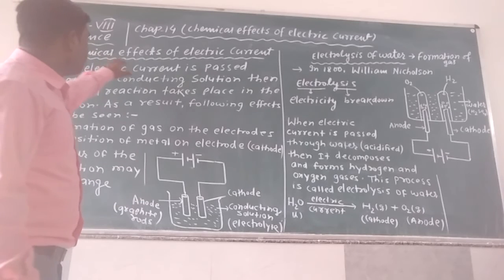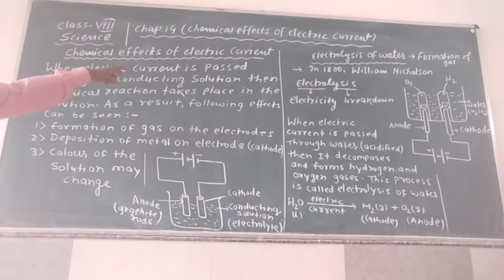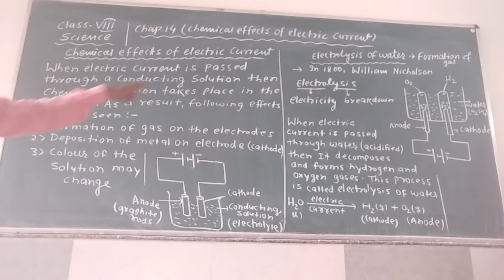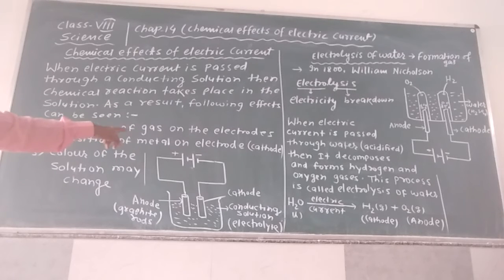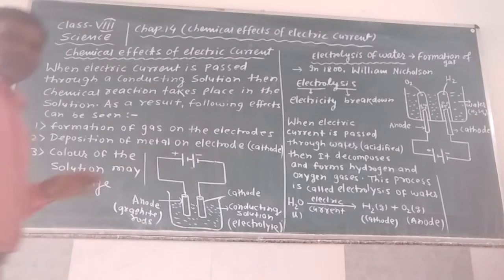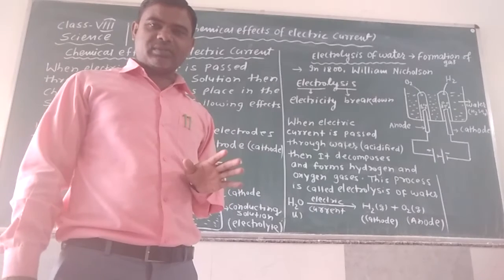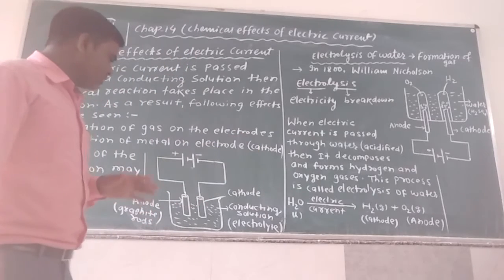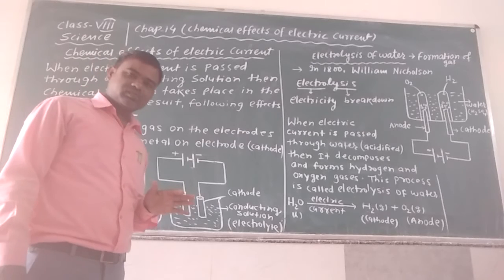Now let us understand about the chemical effects of electric current. Chemical effects of electric current means when electric current is passed through a conductive solution, a chemical reaction takes place. As a result, the following effects can be seen: first, formation of gas on the electrode — gas will form and deposit on both anode and cathode; second, deposition of metal on the cathode; third, the color of the solution may change.